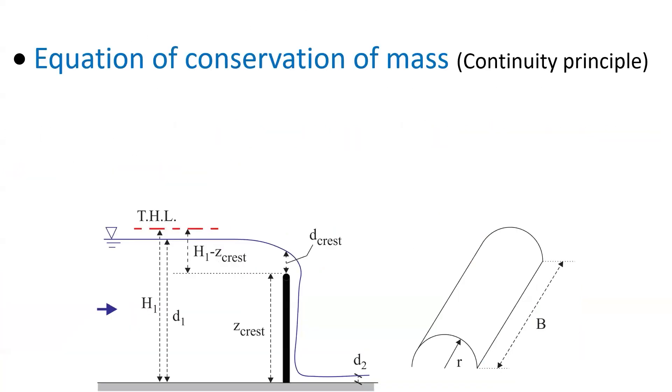The continuity principle, or conservation of mass, states that the volumetric discharge equals the velocity times the flow cross-section area. For a rectangular channel, it will be the water depth times the transverse breadth.